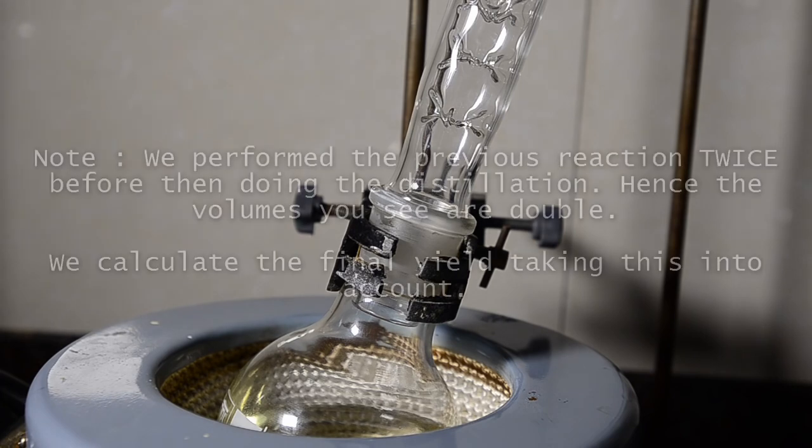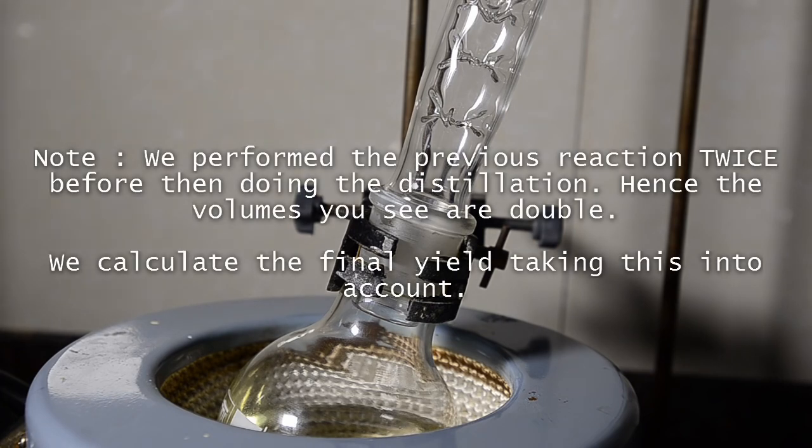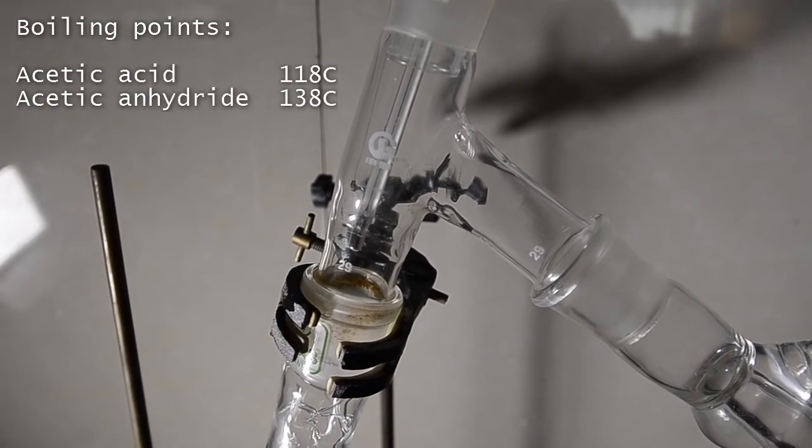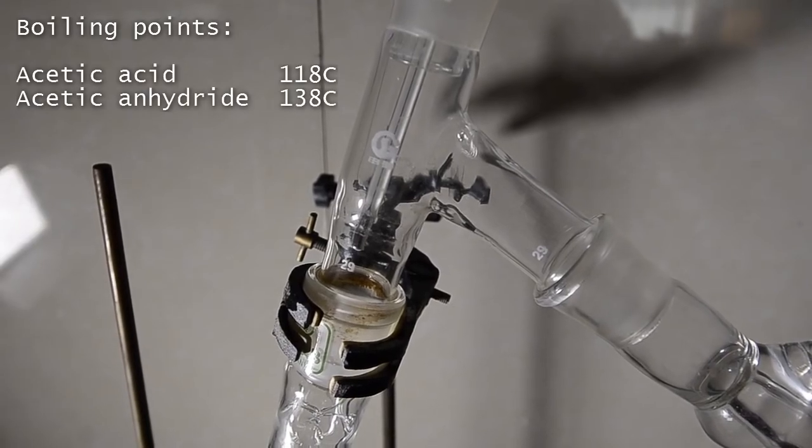To purify our crude product, we'll fractionally distill it. We're using a 40 cm vigreux column as you can see here. We've chosen to fractionally distill because acetic acid and acetic anhydride have boiling points which are around 30 degrees apart.